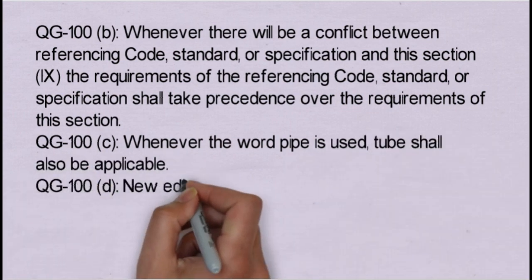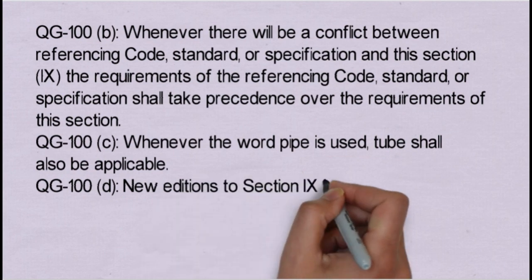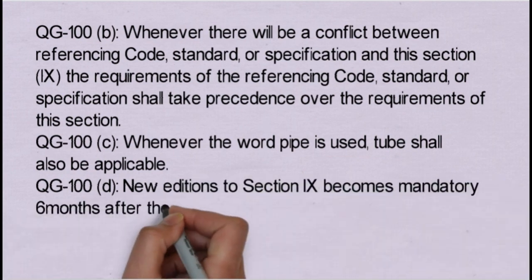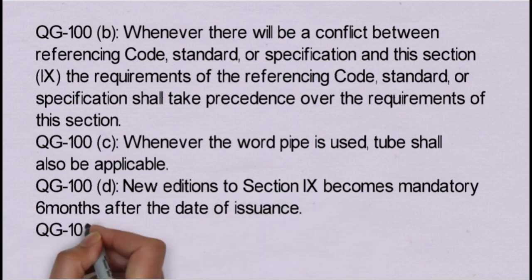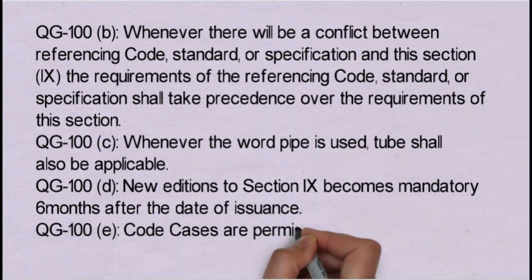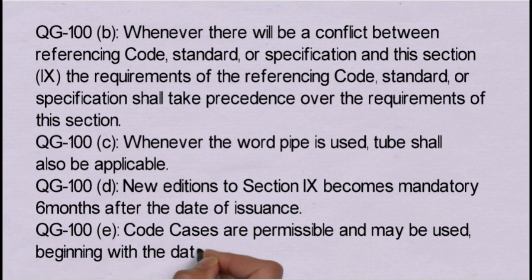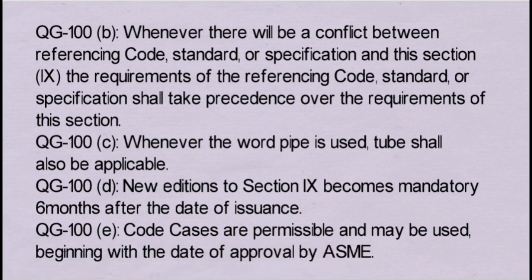QG100D states that new additions to Section 9 become mandatory six months after the date of issuance. QG100E states that code cases are permissible and may be used beginning with the date of approval by ASME. If you want to know the difference between a code, standard or specification, you can watch one of our videos available on our YouTube channel.